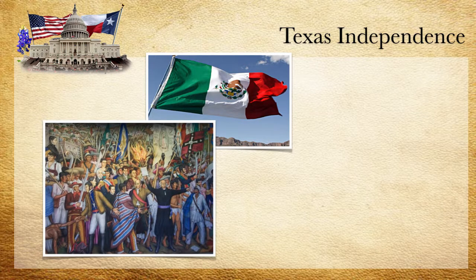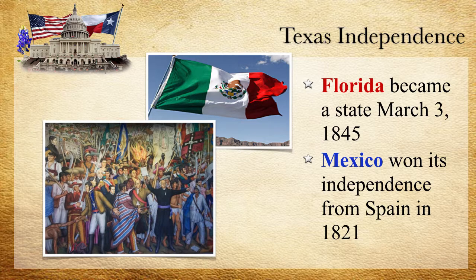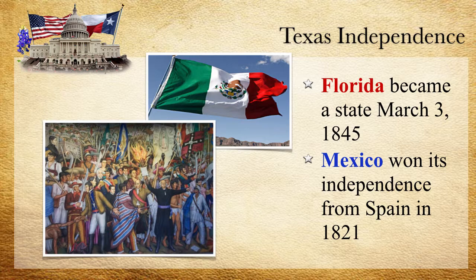Florida became a state on March 3rd, 1845, which sets the stage for what we're about to discuss. Another key event: in 1821, Mexico won its independence from Spain. This gave a huge part of North America to Mexico — basically Mexico owned a lot of that land south of the United States, including the western part of what we call the United States today. So now we're dealing with Mexico, not Spain, when trying to acquire these new lands.